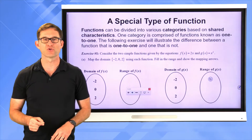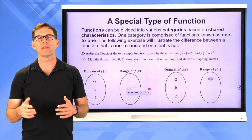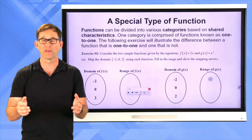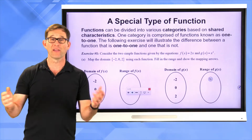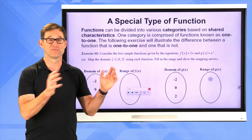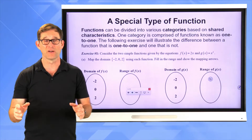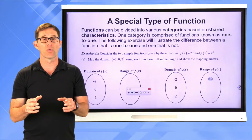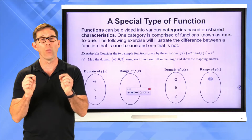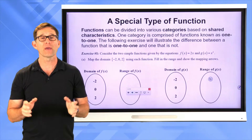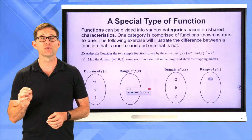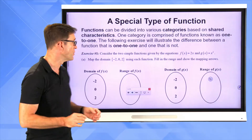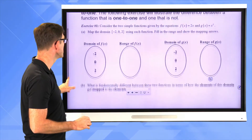Functions can be divided into various categories based on shared characteristics — we do this with everything, not just functions but plant life and stars and all sorts of things. We group things by shared characteristics. One category is comprised of functions known as one-to-one. The following exercise will illustrate the difference between a function that is one-to-one and one that is not.